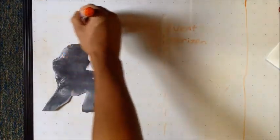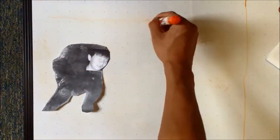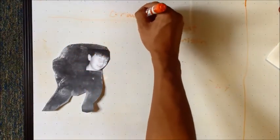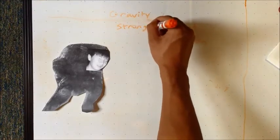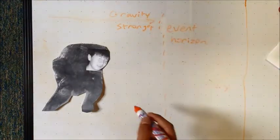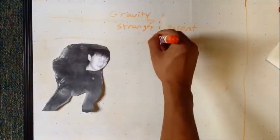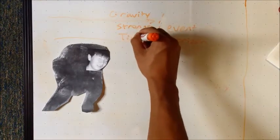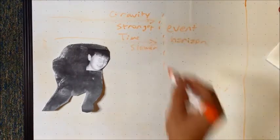First, general relativity dictates that strong gravitational fields will dilate time relative to areas with weaker gravitational fields, much like traveling at high speeds dilates time relative to objects at rest. As Nevancah drifts towards the event horizon, time slows down more and more for him relative to us observers on the spaceship.